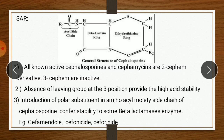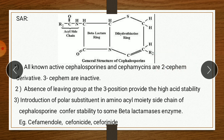The important topic is SAR — structural activity relationship. The general structure of cephalosporins has a side chain at R1 and a leaving group at R2. First SAR point: all known active cephalosporins and cephamycins are 2-cephem, meaning the double bond is at position 2. 3-cephems, where the double bond is shifted to position 3, are inactive. So 2-cephems are active and 3-cephems are inactive.